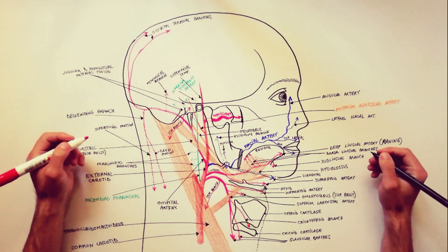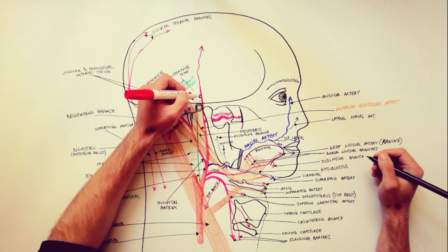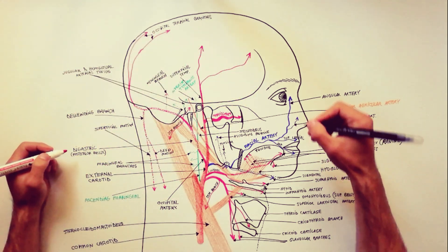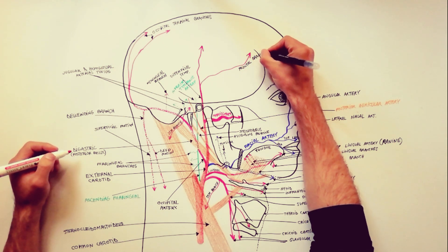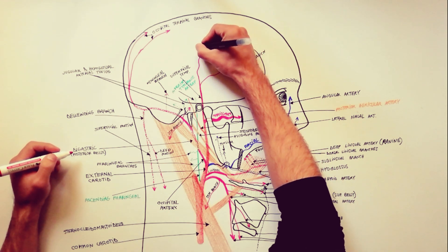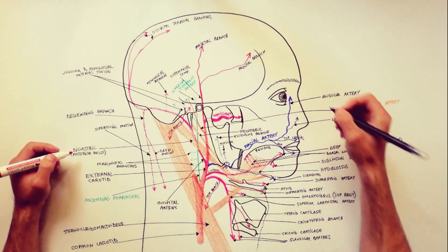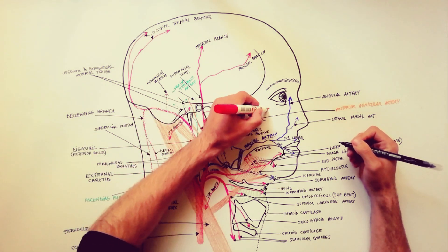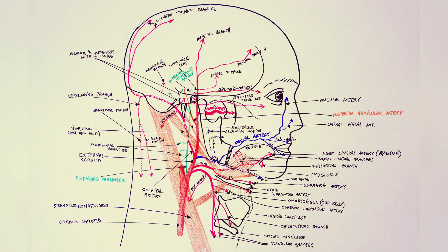Apart from these six collateral branches of the external carotid artery, as mentioned at the beginning of the video, there are two terminal branches: the superficial temporal and the maxillary arteries. The superficial temporal artery terminates in the temporal region by way of a parietal and a frontal branch. Before giving these two terminal branches, the superficial temporal also gives off the transverse facial artery, the zygomatico-orbital artery, the middle temporal artery, and anterior auricular branches. The branches of the maxillary artery have already been described in a separate video, which you are welcome to watch on the channel.